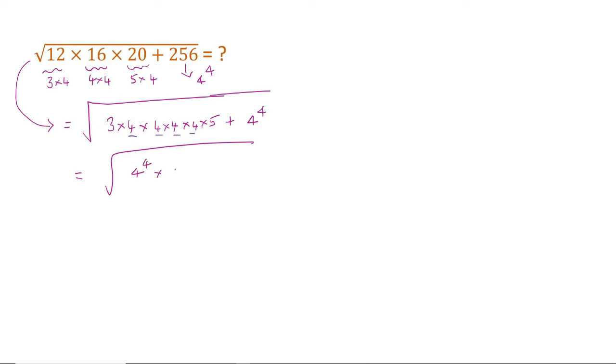So, you can write like this. Here you have 4 to the power of 4, and here you have 4 to the power of 4. So it can be taken out common. Then what remains? 3 into 5 is 15. 4 to the power of 4 has been taken out common, so plus 1 should come here. 15 plus 1 is 16.